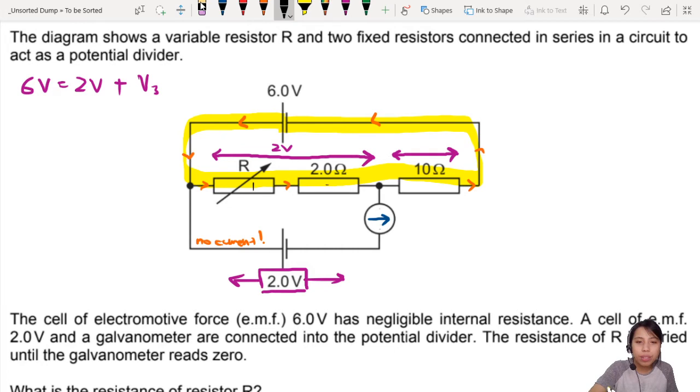So that means your six volts will be the two volts plus that missing resistor three. Let's just give the numbers one, two, and three. So what would V3 be? Six minus two, four. Four volts. So this is four volts. We're one step closer now.